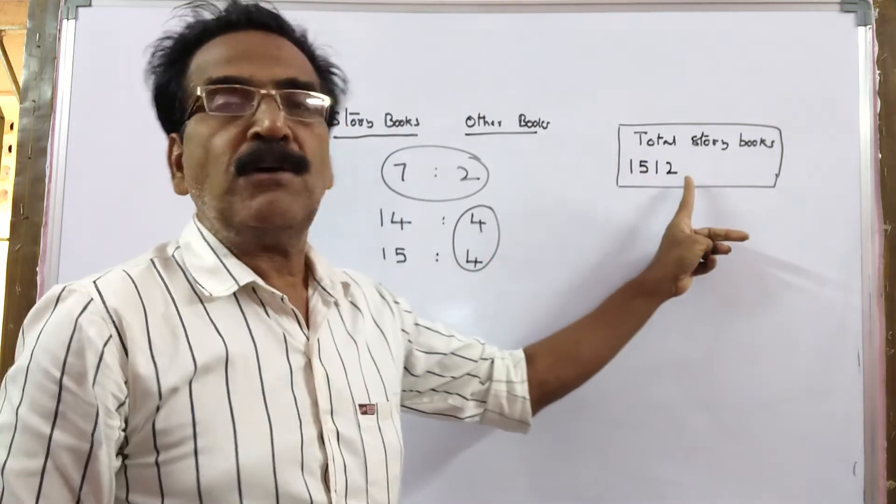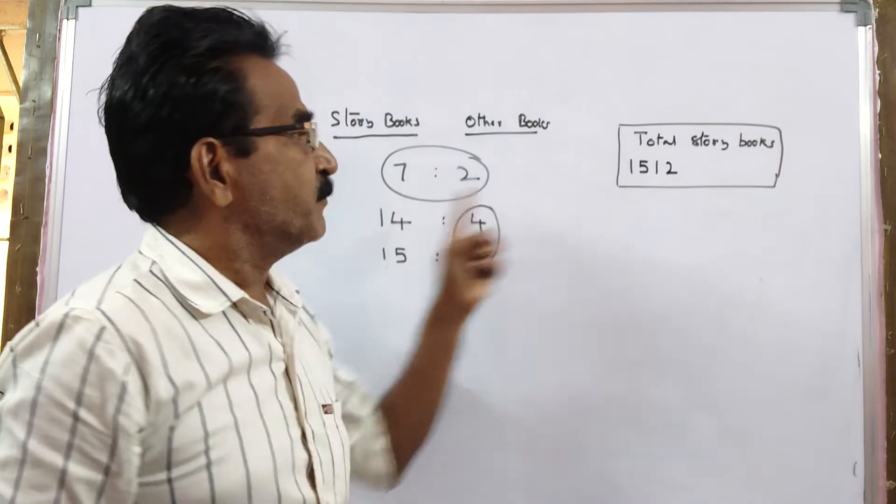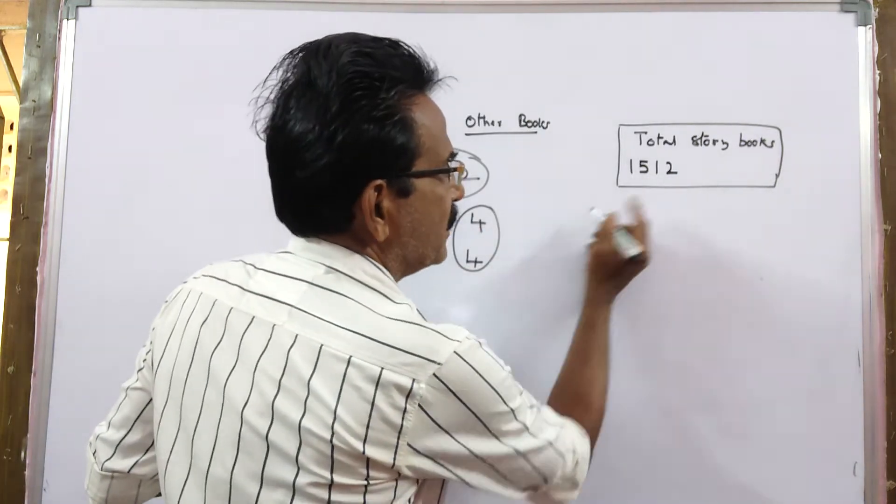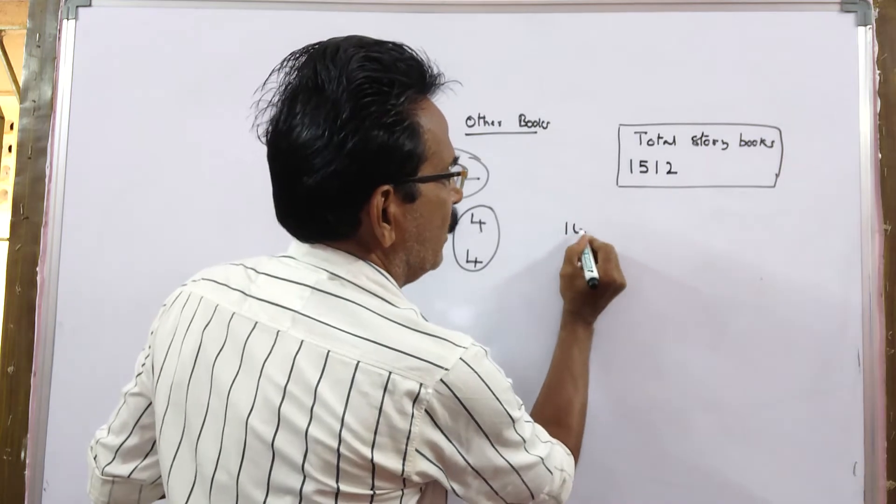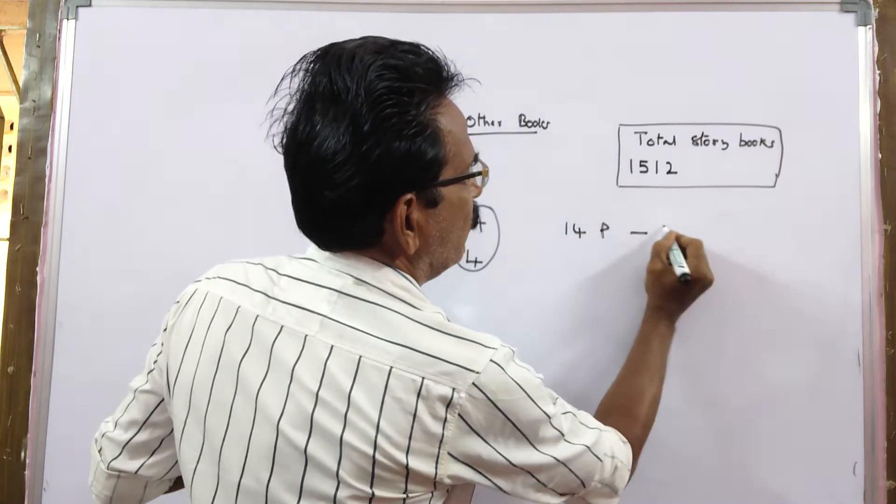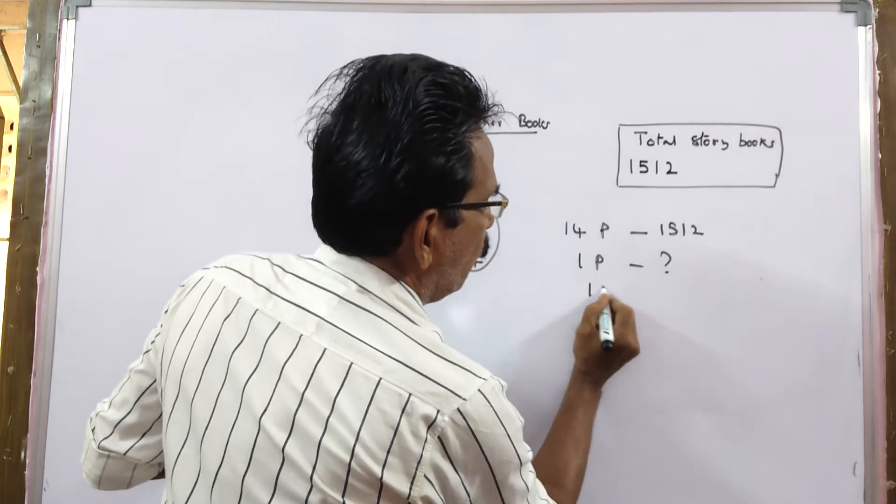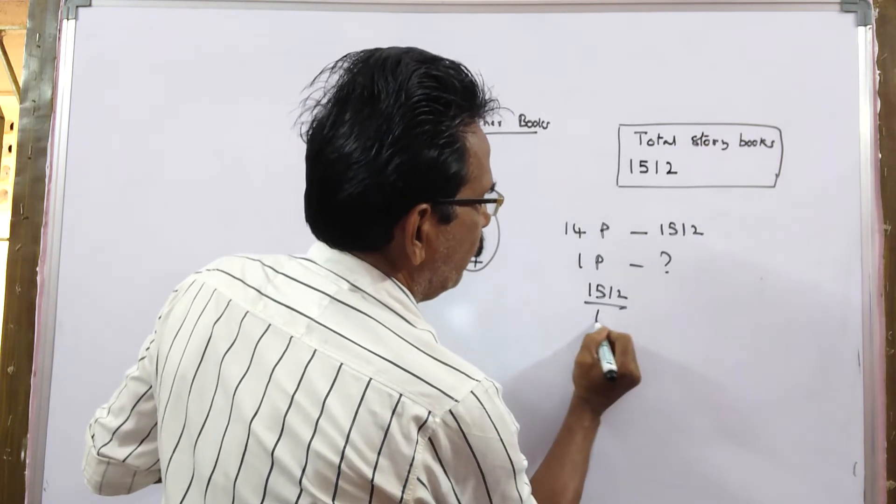Here, we know the value of 14 parts. 14 parts is equal to 1,512. 1 part is equal to how much? 1,512 by 14.